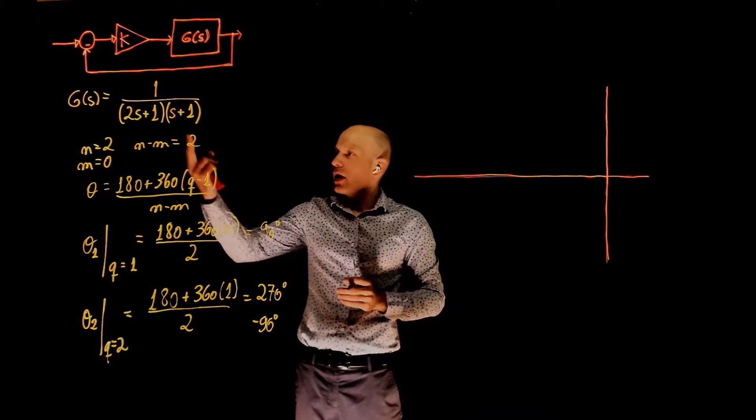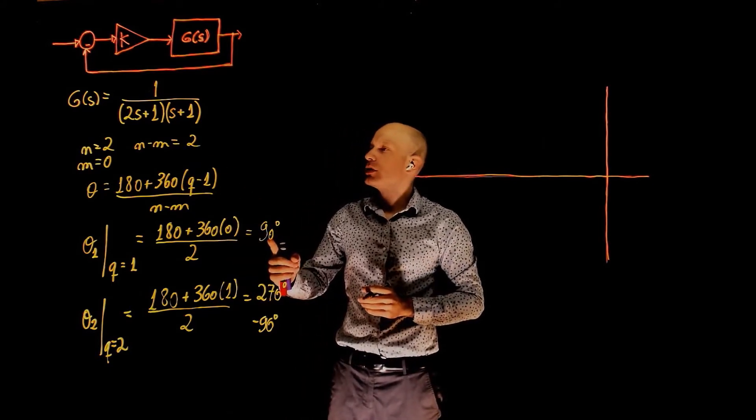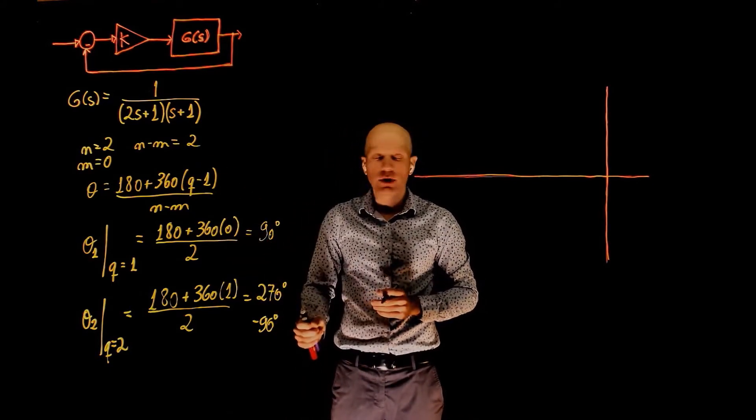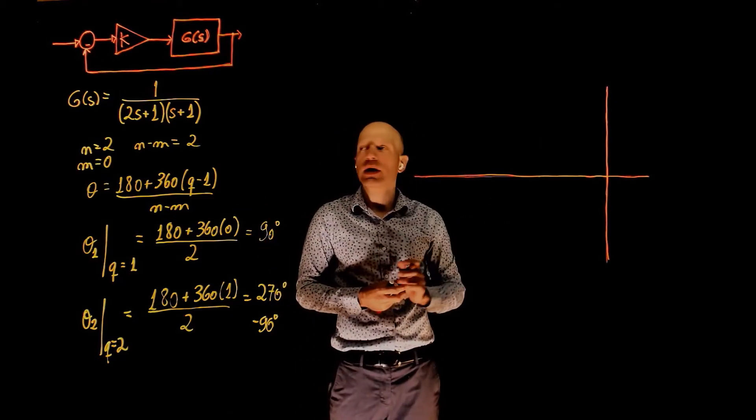Alright, so now we know that we have two more poles than zeros. They will go to infinity following asymptotes that have an angle of 90 degrees and negative 90 degrees with respect to the real axis. Now let's locate the poles and zeros on the s-plane.